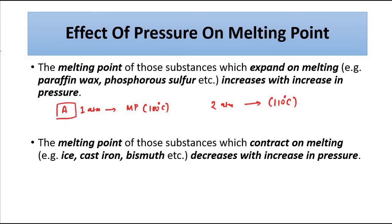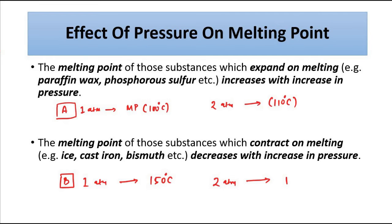Now let's take substance B, which is in the second category — it contracts on melting. At one atmospheric pressure its melting point is, say, 150°C. When the pressure is increased to two atmospheric pressure, the melting point decreases, so it will now melt at a temperature below 150°C — say, 140°C. The rule is: melting point increases with pressure if the substance expands on melting, and decreases with pressure if the substance contracts on melting.